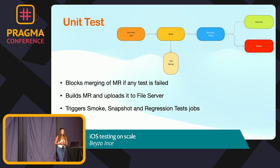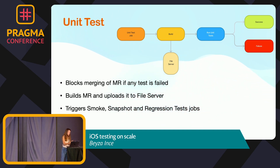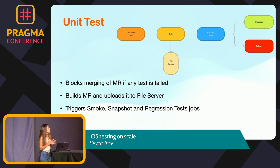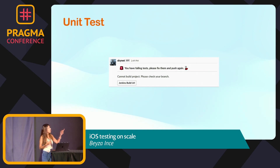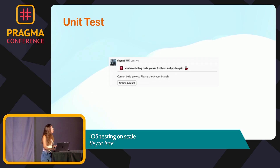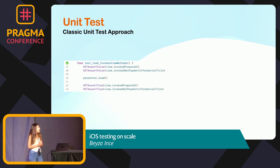The first test is unit test, which has two main responsibilities: running the unit tests and uploading the build to our file server. This test is defined as required — if any test fails in the pipeline, the developer cannot merge the request. This job also triggers the smoke, snapshot, and regression test jobs. We can send a message to the relevant developer if any failure happens, and the developer can access the Jenkins build URL with a button.